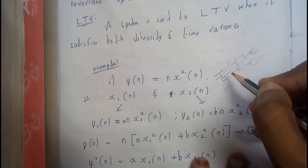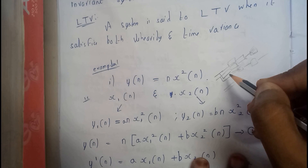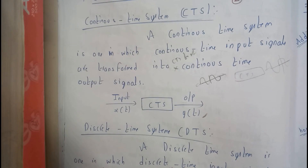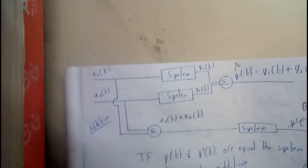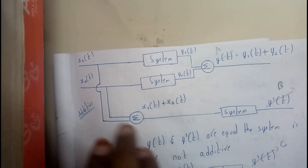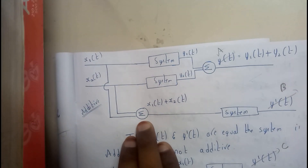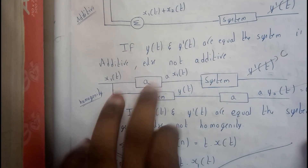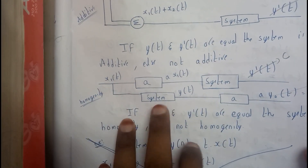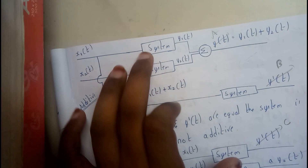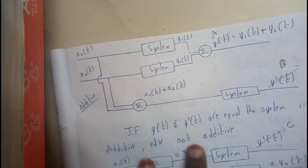In another case, the signals are added first and then passed through the system — that is additivity. Homogeneity is when we first multiply with a constant and then pass through the system, versus passing through the system first and then multiplying with the constant. If both cases yield equal results separately, then the system is called linear.